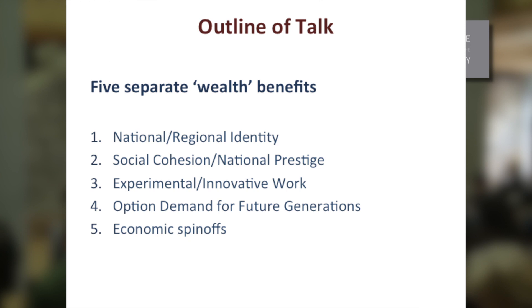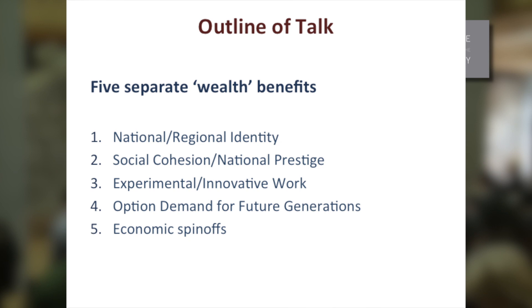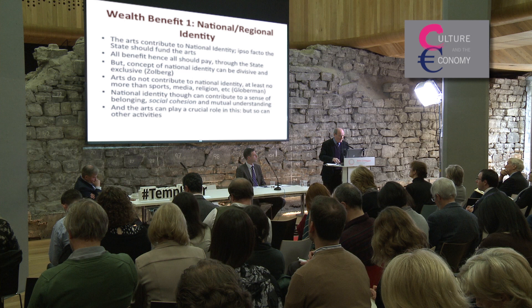And then national prestige, which is slightly different. National prestige can lead to social cohesion. Then there's experimental and innovative work — a lot of work in the subsidised sector benefits the wider economy. David also talked about option demand for future generations, which affects the built heritage, museums and libraries. And then there are the economic spin-offs.